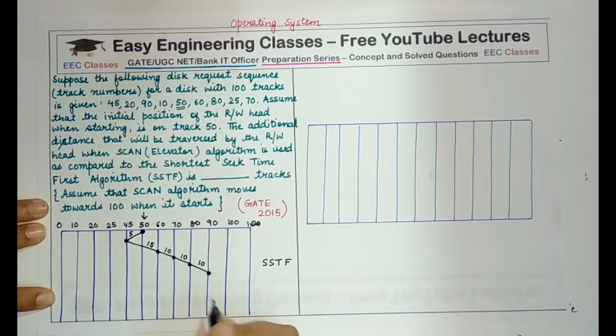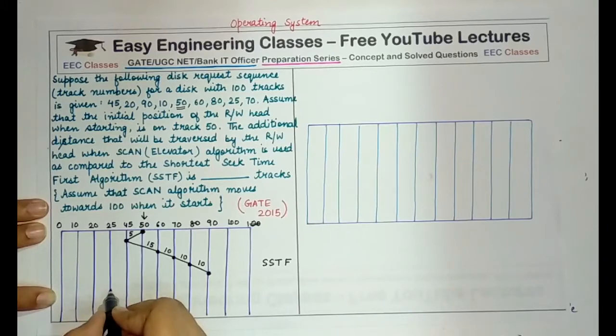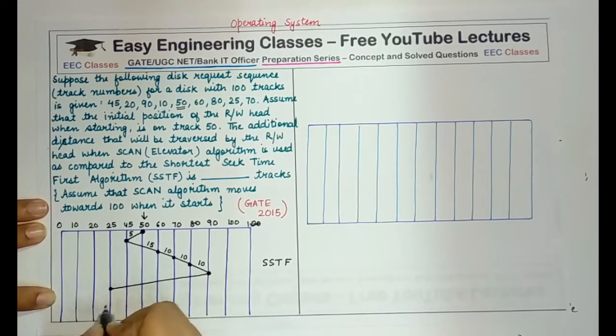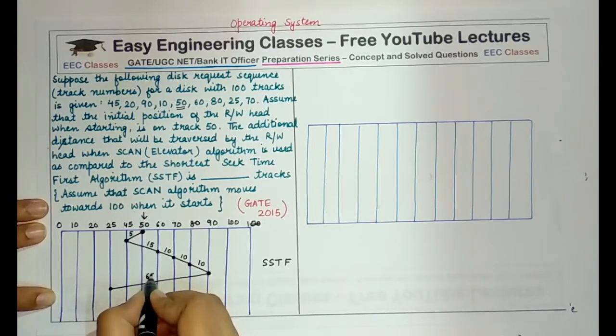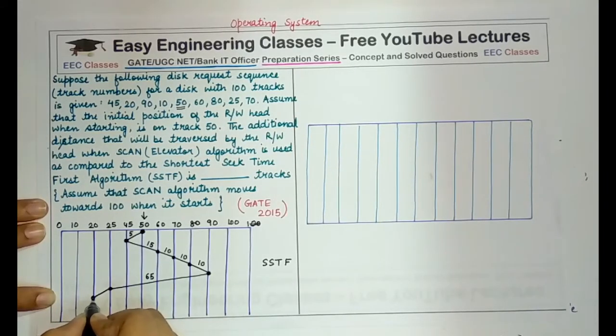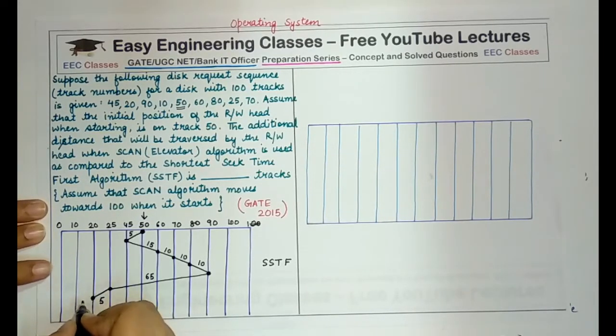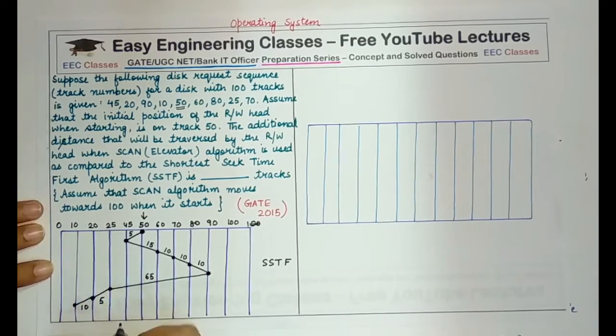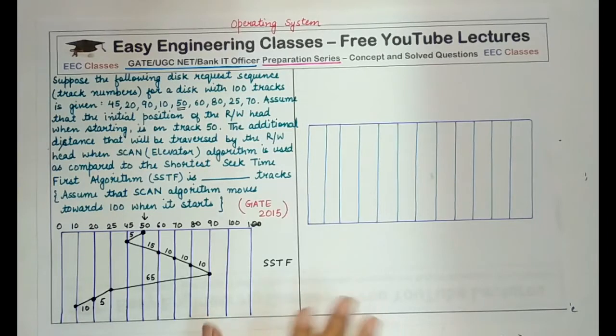And then we stop because 100 is not a request. It is the end of the disk and there we do not have to serve any requests. The next nearest request will be at 25 at this position. So from 90, we turn and go towards 25 and this requires 65 units of time, 90 minus 25. From 25, we need to service 20, which is the nearest that requires 5 units. And from 20, we come to 10, again requiring 10 units.